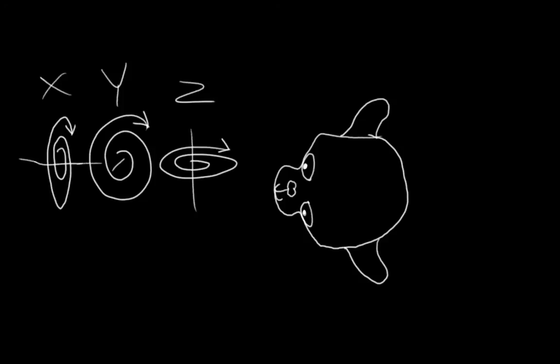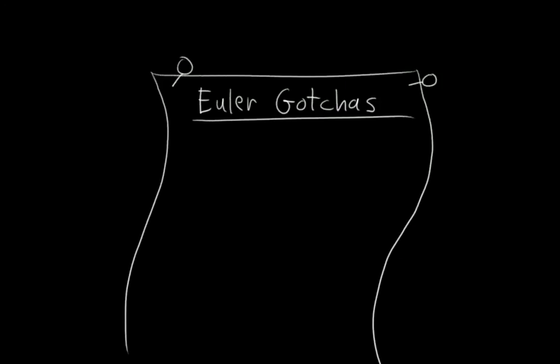However, as conceptually simple as Eulers are, in practice, they have a long laundry list of gotchas. The biggest gotcha is something called Gimbal Lock. But to understand Gimbal Lock, we first need to cover a different gotcha, which is that the meaning of the Euler axes actually change with different rotations.